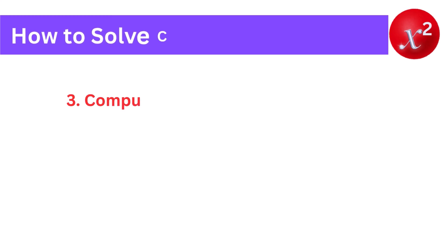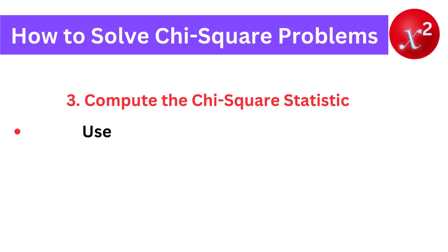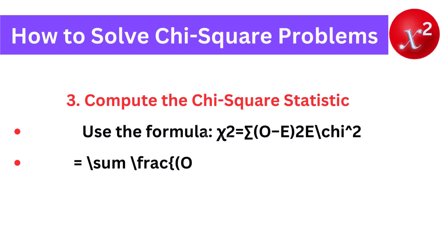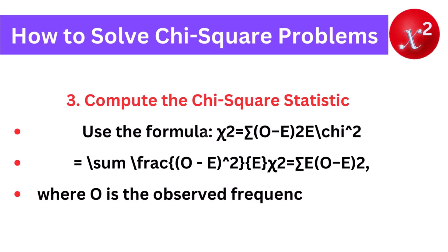3. Compute the chi-square statistic. Use the formula: chi-square equals sigma (O minus E) squared divided by E, where O is the observed frequency and E is the expected frequency.